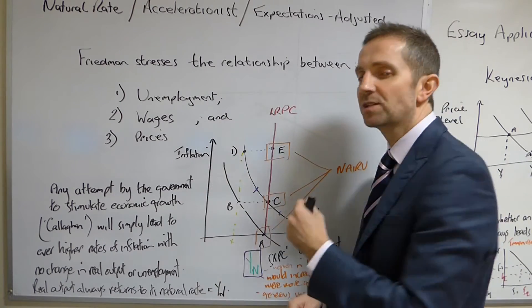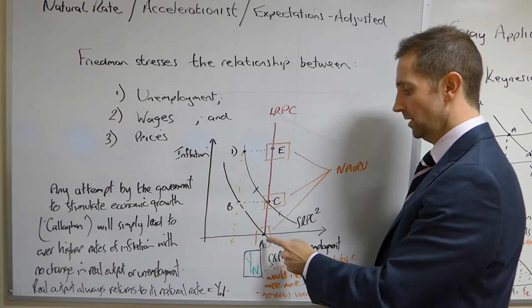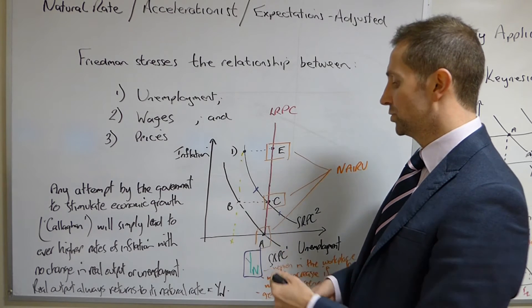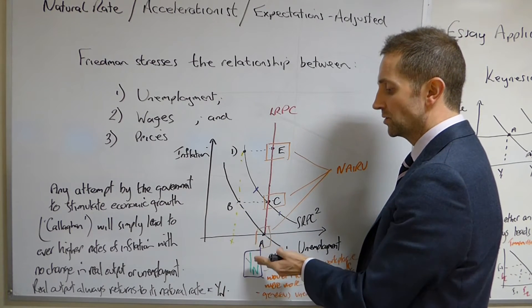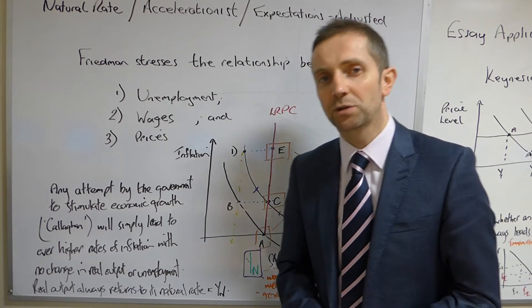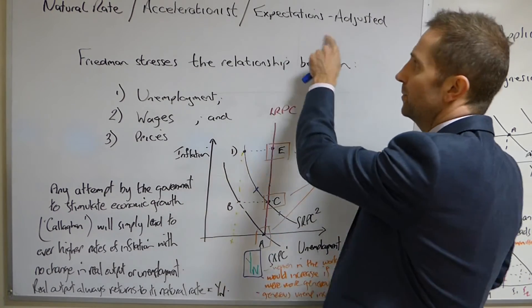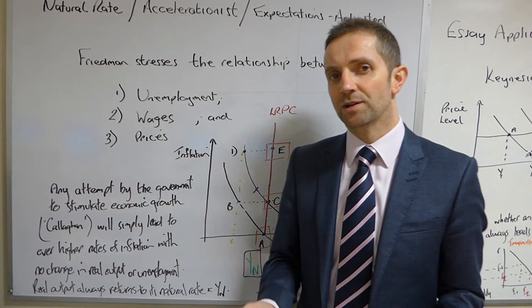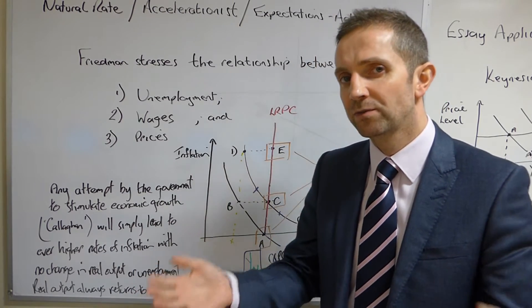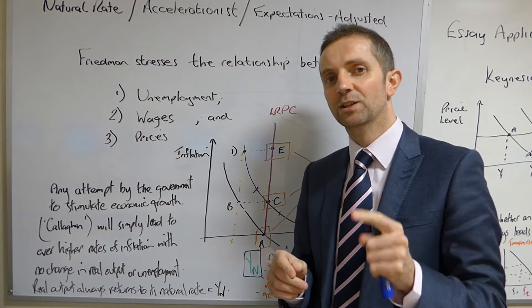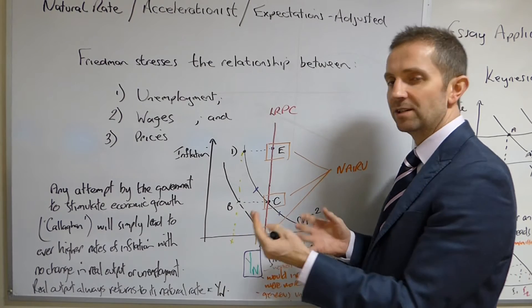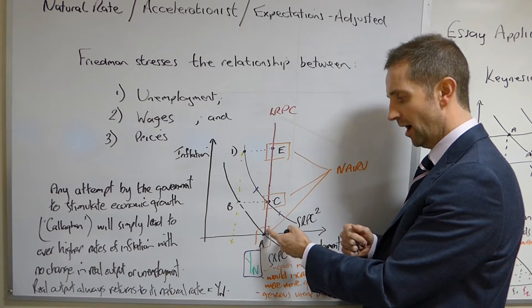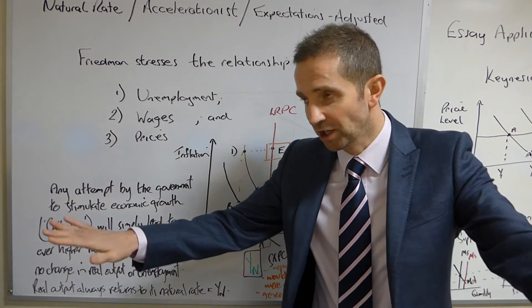And we can use this model to explain why that's the case. So if we start at point A, if we say okay let's try and reduce unemployment, the short run Phillips curve relationship suggests that we would move to B. So we've got lower unemployment and we've got higher rates of inflation. However, Friedman said that people would adjust their expectations instantaneously. And so they would realise at point B that prices have gone up. They would ask for wage rises, we've talked about this in previous videos, in order to maintain their real wage. And so rather than ending up at B, this stimulus into the economy would simply mean that we would end up at point C.